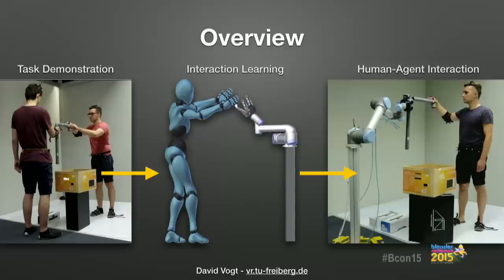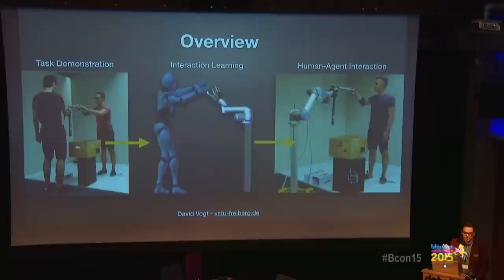What we do is basically a system composed of three steps. The first step is task demonstration — we need to show the system what interactions the character is able to do, and record those interactions. Based on that, we compute something we call an interaction model that captures spatial relationships and intrinsic fine details. Then in the end, a robot or virtual character can interact with a human. I'm going to focus on how Blender can be used to realize all those steps, though we need to implement some extensions — it's not going to work out of the box.